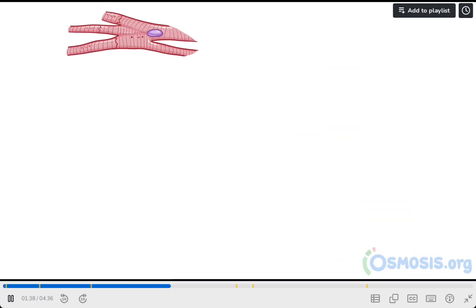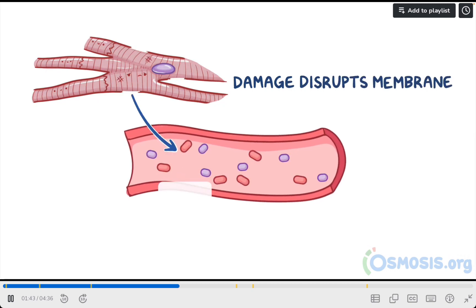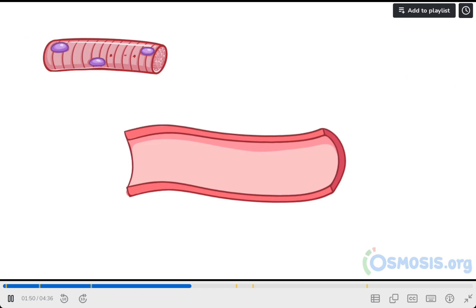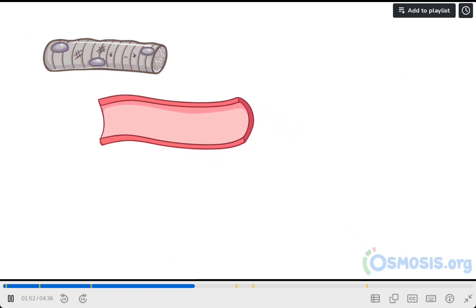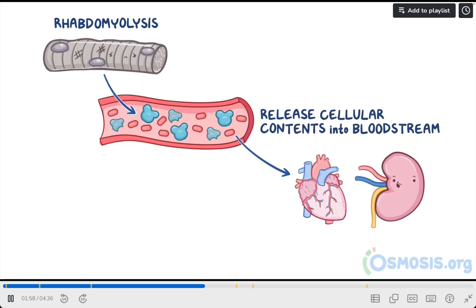At the cellular level, damage to myocytes disrupts their membranes, causing the cellular contents, including CKMB, to be released into the bloodstream. When skeletal muscle cells are damaged, it can cause a condition called rhabdomyolysis, where the damaged muscle cells release their cellular contents into the bloodstream, causing damage to the heart and kidneys.